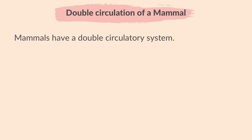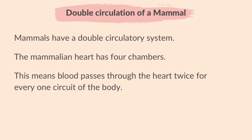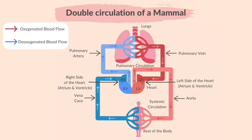Moving on to the double circulation of a mammal. Mammals have a double circulatory system, meaning that blood passes through the heart twice for every one circuit of the body. Here's a diagram to explain it. The red arrows represent the oxygenated blood flow and the blue arrows represent de-oxygenated blood flow. The heart is labelled as if it was in the chest, so what is on your left on a diagram is actually the right-hand side and vice versa.